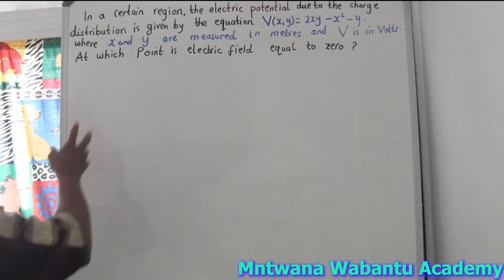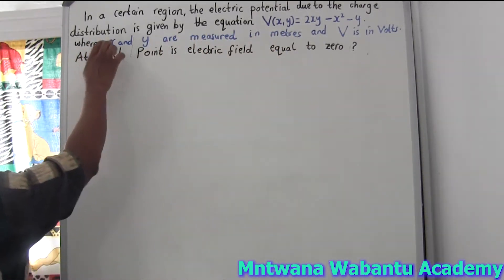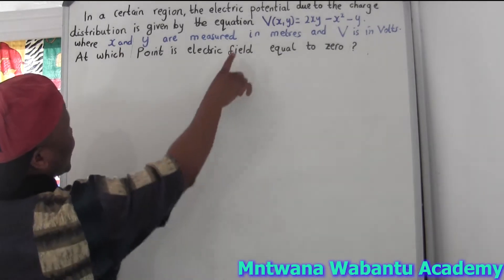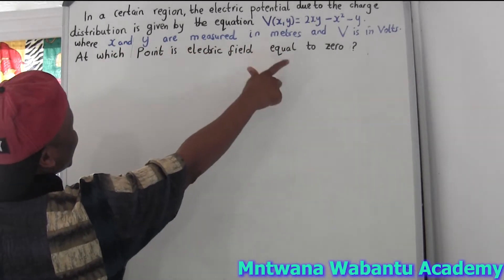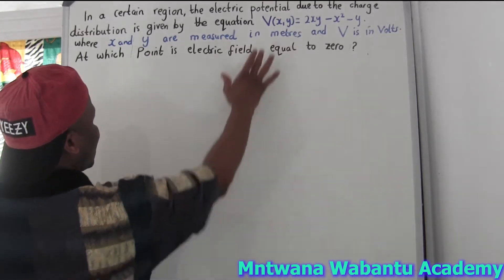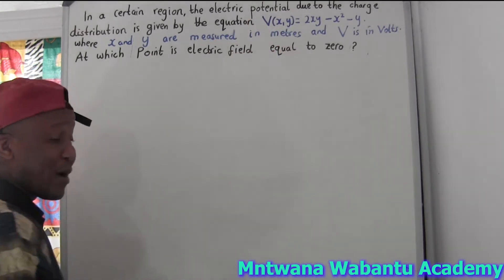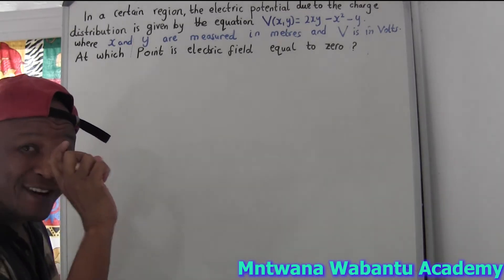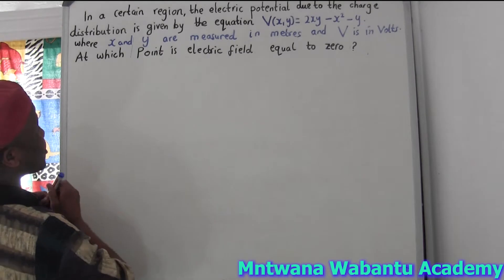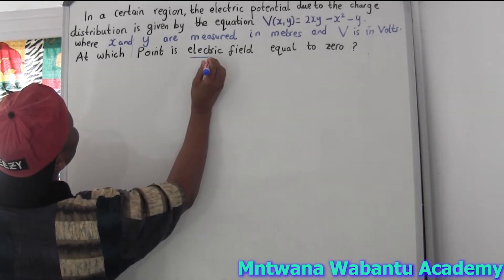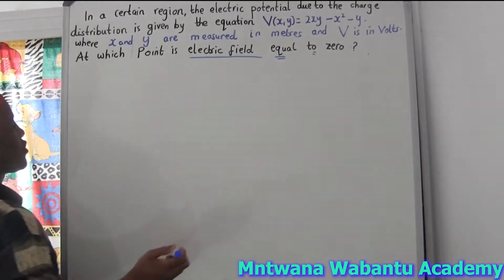Let's get started. In a certain region, we've got an electric potential due to a charge distribution given by the equation right there, where x and y are measured in meters. The question asks: at which point is the electric field equal to zero? This is very important — whenever you get a question, pay attention to what it's asking.